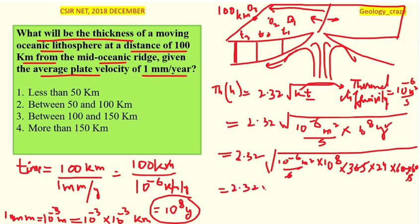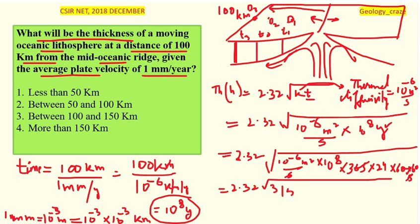Multiplying it all out: 10⁸ × 365 × 24 × 60 × 60 gives approximately 3,153,600 × 10⁸ seconds, which simplifies to about 3.15 × 10¹⁵ seconds. Multiplying by k = 10⁻⁶ m²/s, we get kt ≈ 3.15 × 10⁹ m². Taking the square root gives approximately 56,000 meters.